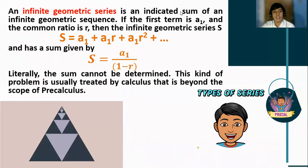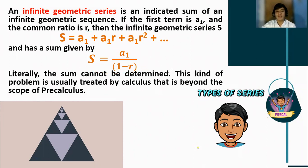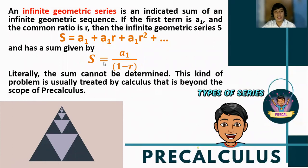The infinite geometric series is the indicated sum of an infinite geometric sequence. If the first term and the common ratio are given, we can solve for the sum using the formula S equals a sub 1 over the quantity (1 minus r). Although the sum of infinitely many terms cannot be determined directly, this formula was derived from concepts applicable in basic calculus. The only values needed are the first term a sub 1 and the common ratio r.